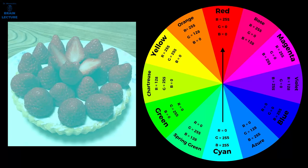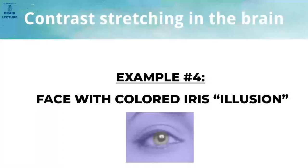There can be no talk of any color constancy here. All the brain is doing is increasing color contrast. The fourth illusion is called face with colored iris and it demonstrates how the human brain raises color contrast the same way as explained in the red strawberries illusion.